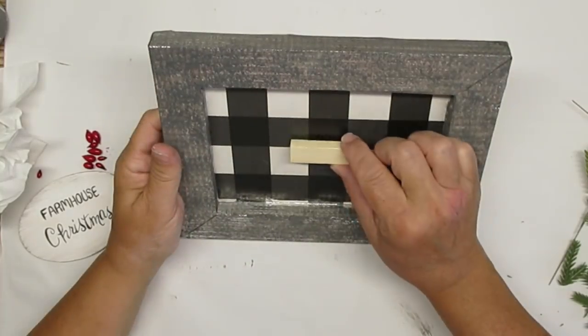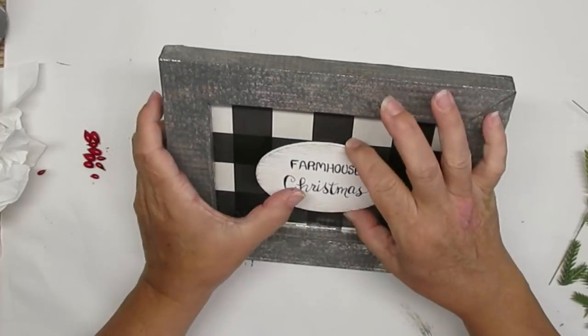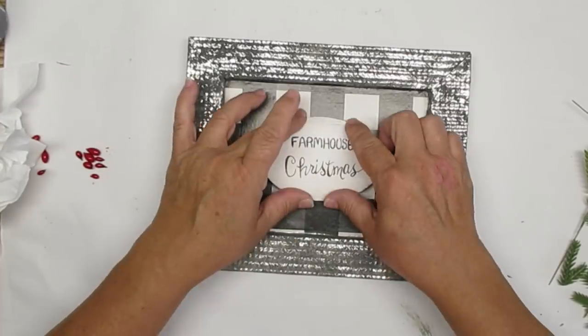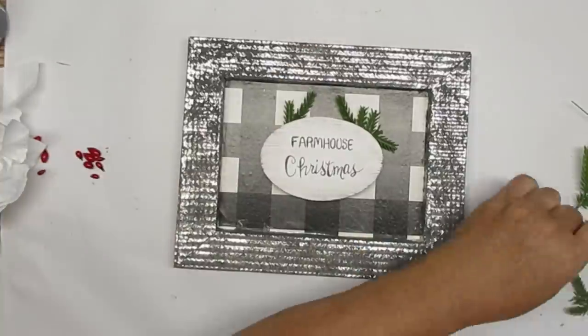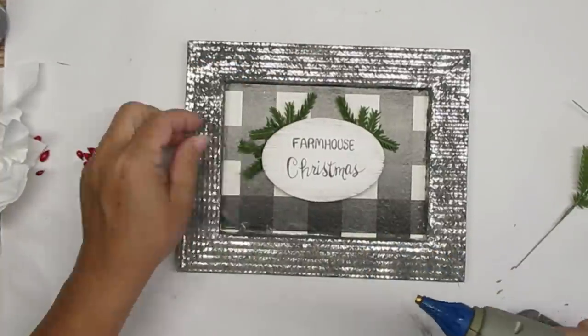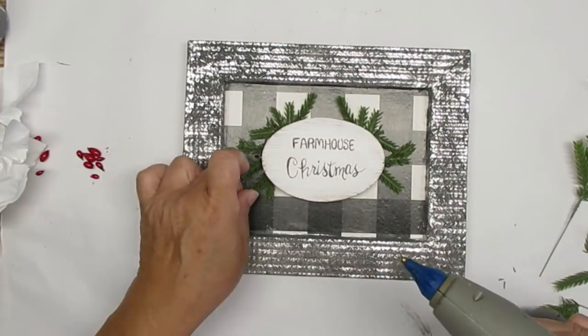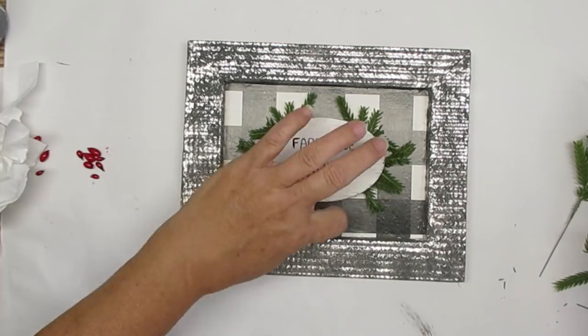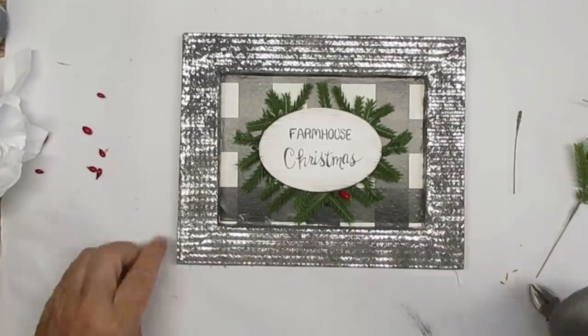I'm using a tumbling tower block to glue down right in the center of the frame and then I'll be gluing the little farmhouse Christmas sign right on top of that. This is going to raise it up a little bit and give me some space to put some of the pine greenery underneath. Using the pip berries that I pulled off this project at the very beginning I'm going to hot glue some of them all the way around the sign and this little project is done.